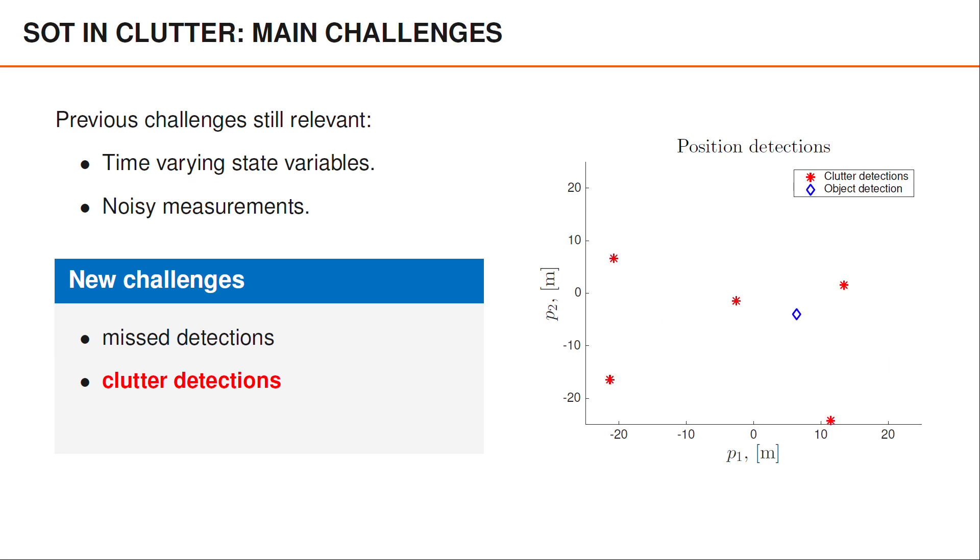However, if indeed our measurement looked like this, with clutter detections marked with red stars and object detections as blue diamonds, we could just ignore the clutter detections, and they wouldn't complicate things much.